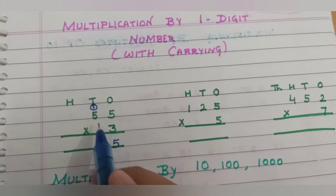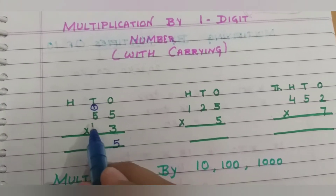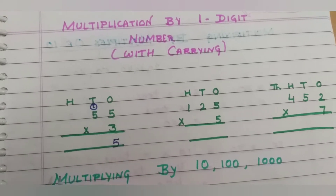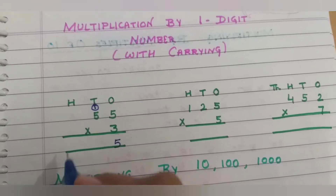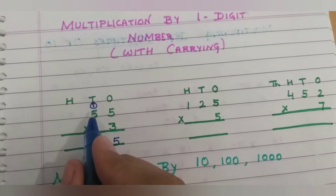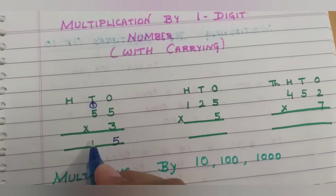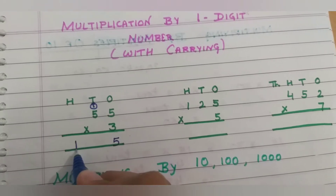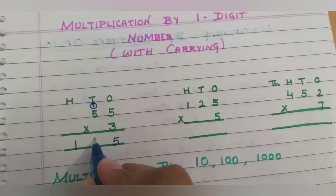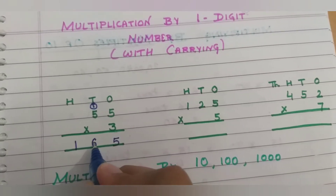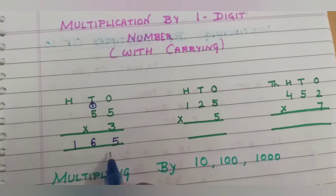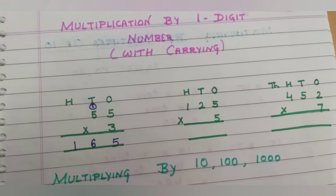Again, three fives are fifteen. Fifteen plus one — we always add the carry. So fifteen plus one is sixteen. So our answer is one hundred sixty-five.